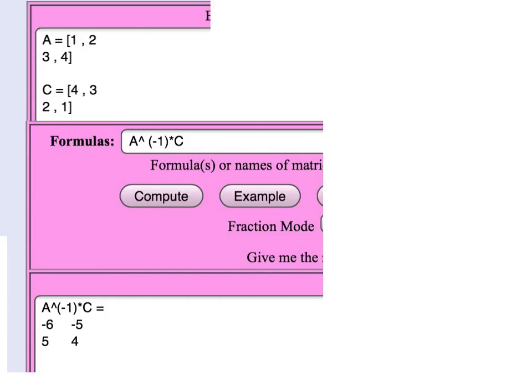So here's a pieced together clipping from use of the matrix tool that shows what happens if we take A, 1, 2, 3, 4, top row 1, 2, bottom row 3, 4, or C equals 4, 3, top row, 2, 1, bottom row, and do that calculation we were just talking about, A inverse times C. The matrix tool claims that we get top row minus 6 minus 5 and bottom row 5, 4.